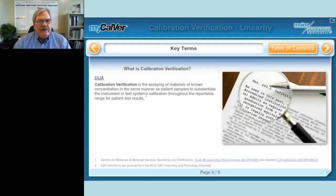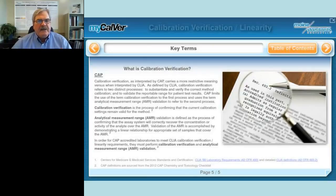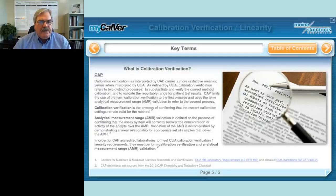Calibration verification, as defined by CLIA, is the assaying of materials of known concentration in the same manner as patient samples to substantiate that the instrument calibration throughout the reportable range is accurate. The CAP version is a little different. The CLIA version sounds like two steps: to verify the correct method calibration and to validate the reportable range. CAP breaks those into two different portions — calibration verification confirms the current calibration, while analytical measurement range validation validates that you are linear over the reportable range. If your lab is accredited by CAP, these are two different experiments you essentially have to perform.